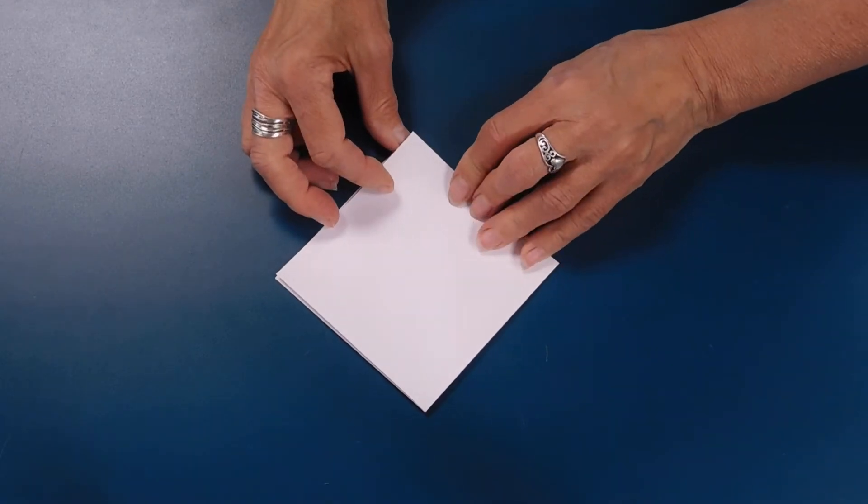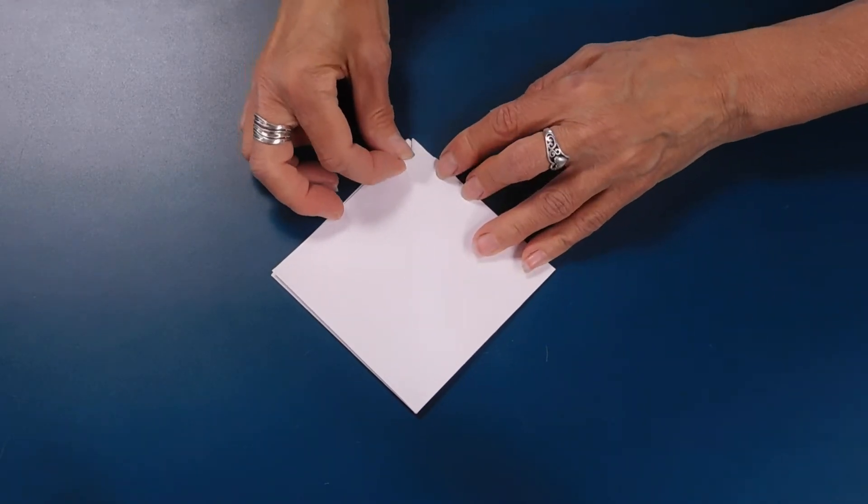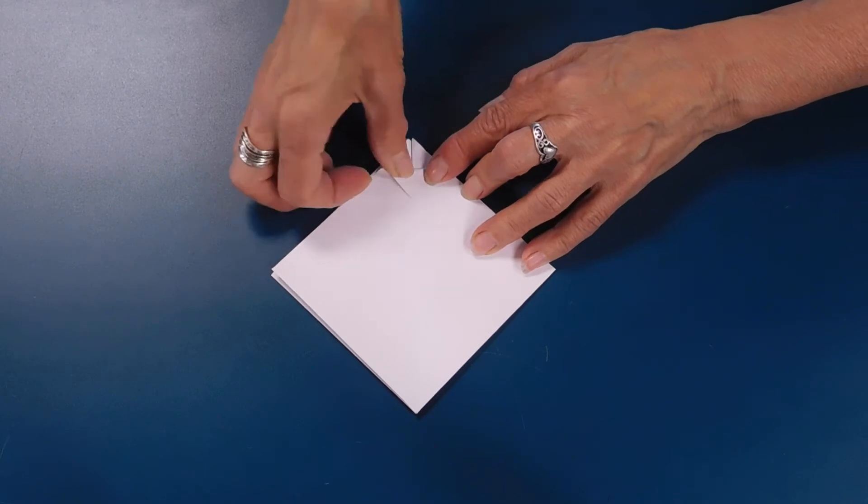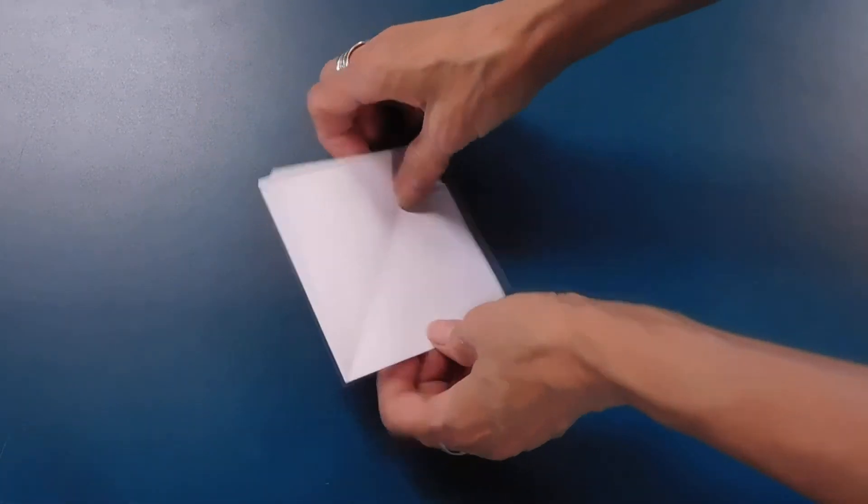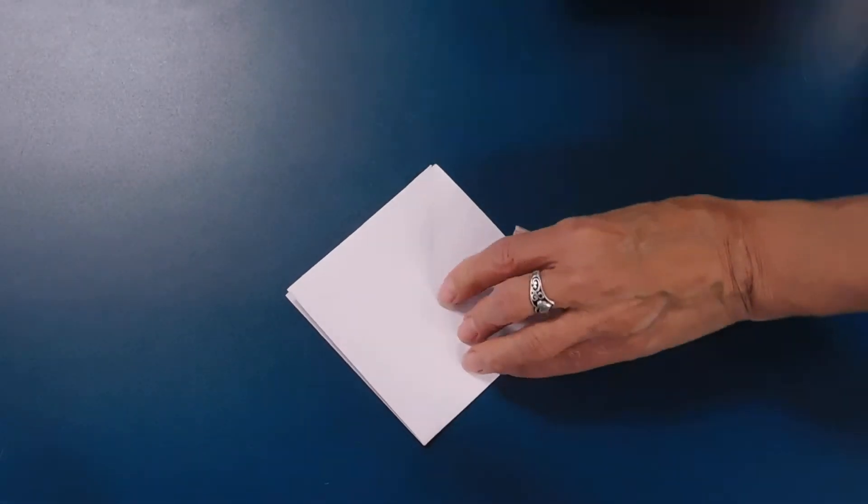We're going to open that back up. And then we're going to fold that top point to that crease we just made. And then we're going to flip it over and do the same thing on the other side.